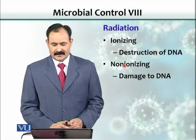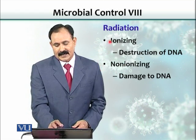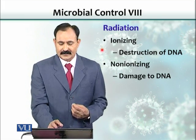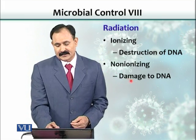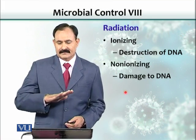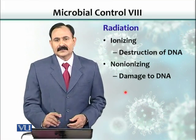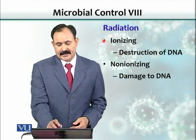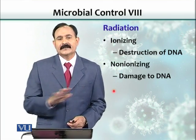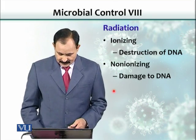Radiation is another physical way to control microbes. There are two kinds: ionizing and non-ionizing. Both basically cause DNA damage. Ionizing radiation has more power, causing more damage to DNA, whereas non-ionizing radiation like UV light is less penetrating. The efficacy of UV light remains confined to surfaces only — we cannot achieve disinfection or sterilization by non-ionizing radiation in fluids. Only bacteria on the very surface of a fluid could be destroyed, not deep within the solution.